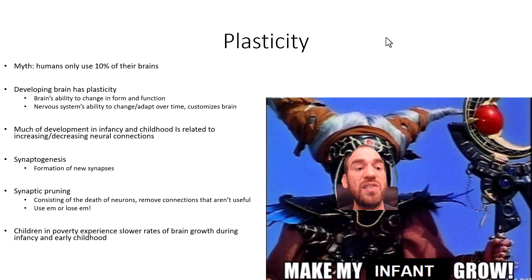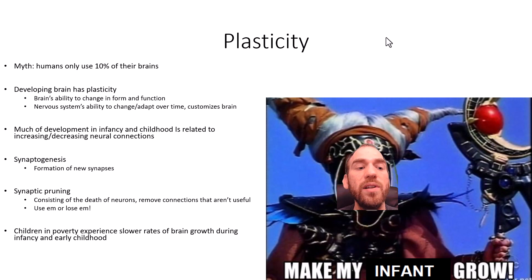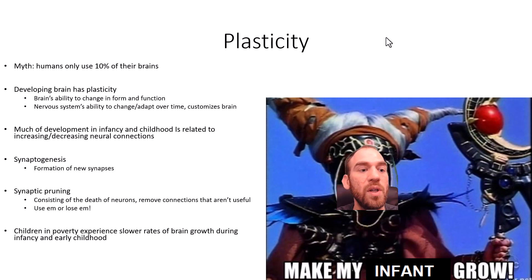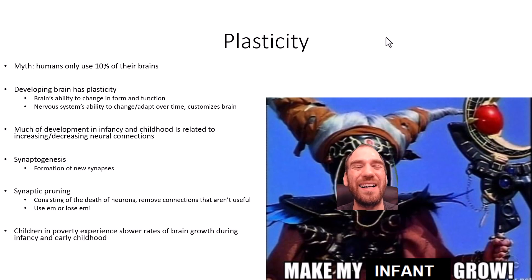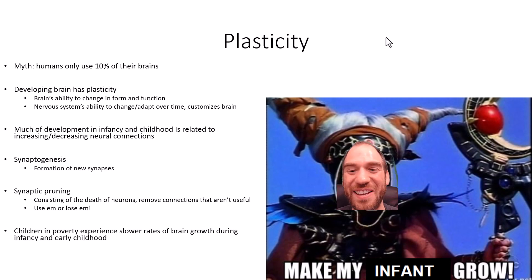The developing brain has plasticity — the brain's ability to change in form and function, and the nervous system's ability to change and adapt over time. It customizes the brain to the environment the child lives in. Think of it as hot plastic being molded by the child's environment: interactions with parents, peers, society, the community. Much of development in infancy and childhood involves increasing or decreasing neural connections through synaptogenesis and synaptic pruning — use them or lose them.